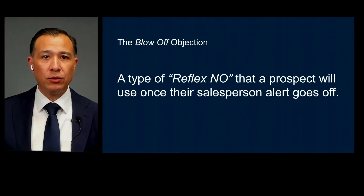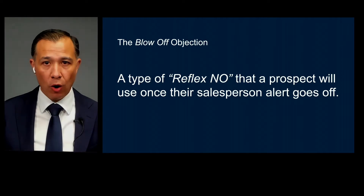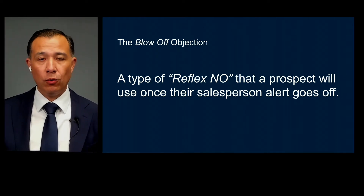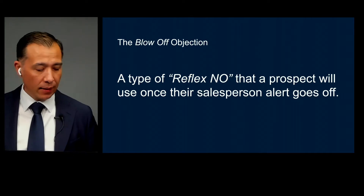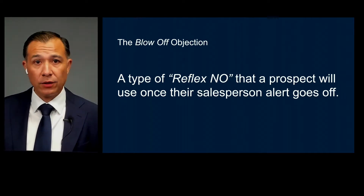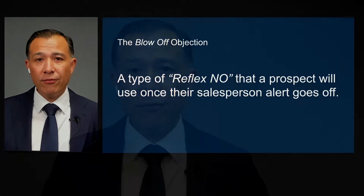What is a blow-off objection? A blow-off objection is a type of reflex 'no' that a prospect will use once their salesperson alert goes off. A reflex 'no' is something you just say — it's like walking into a clothing store to buy jeans and the rep says, 'Hey, can I help you with something?' and you go, 'No, I'm just looking.' That's a reflex no.